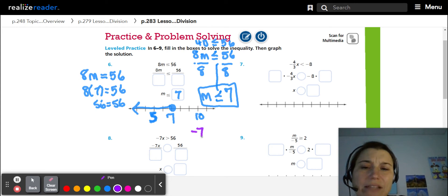So number eight, I have negative seven X is greater than 56. And now this time I'm going to divide by negative seven, divide by negative seven. I'm bringing down my inequality. So I have X, and I have negative eight.